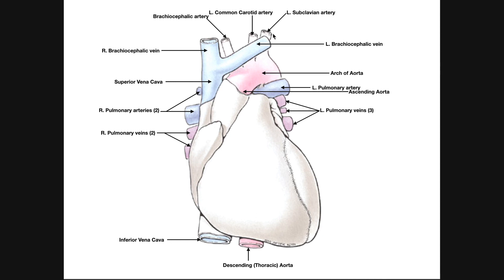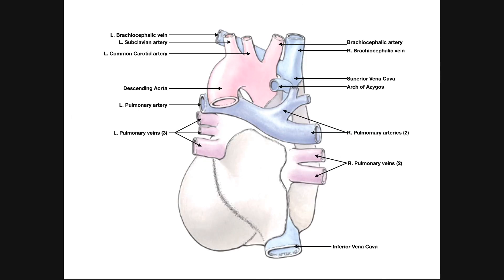Now let's take a look at a posterior view of the heart. Here's the apex down here and the base up here. Since we're looking at a posterior view, this is now the right side of the heart and over here is the left side. This region would be the left atrium, down here the left ventricle, over here the right atrium, and then the right ventricle.